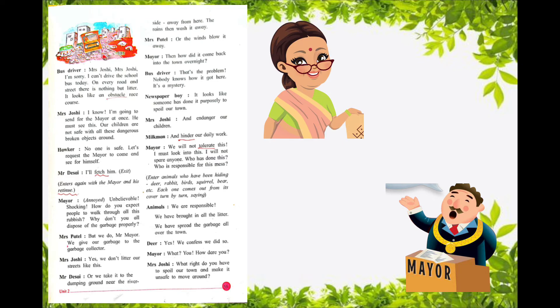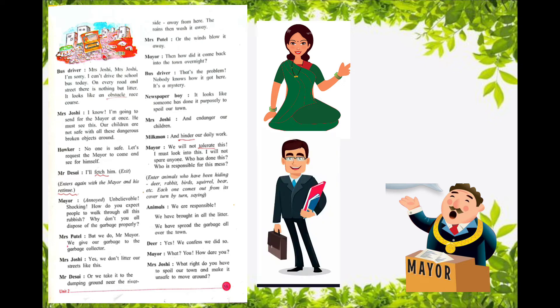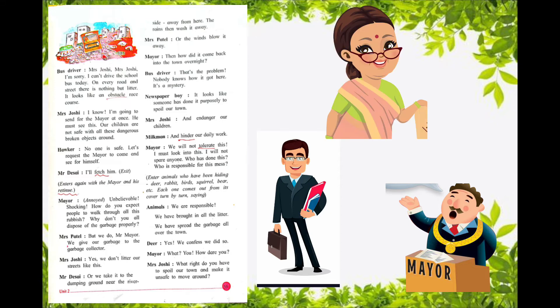Mrs. Patel said, 'But we do it, Mr. Mayor — we give our garbage to the garbage collector who comes to collect it.' Mrs. Joshi said, 'Yes, we don't litter our street like this.' Mrs. Desai said, 'Or we take it to the dumping ground near the riverside, away from here. The rain then washes it away.' Mrs. Patel said, 'Or the winds blow it away.'